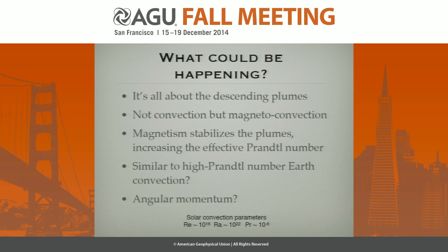Question: for this last magneto-convection idea, is it sensible that the interaction parameter — are the Lorentz forces actually strong enough to damp turbulence? Do we have any estimates? His question was: can magnetism actually stabilize plumes, and do we have any estimates? The answer is, I don't think we do. It's just speculation.